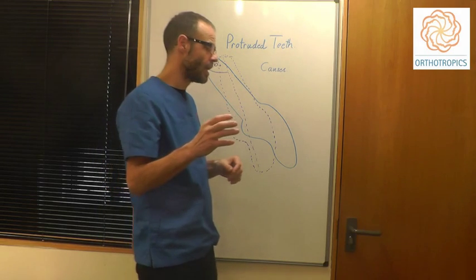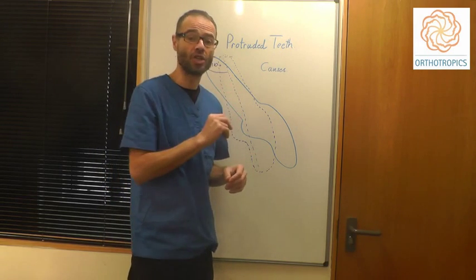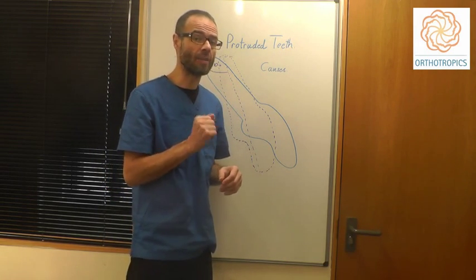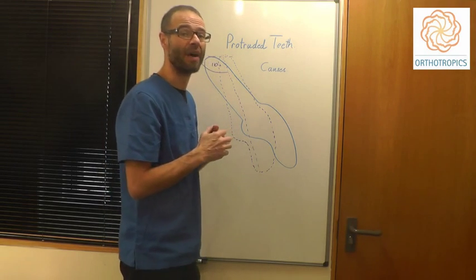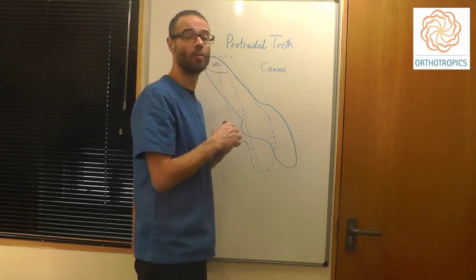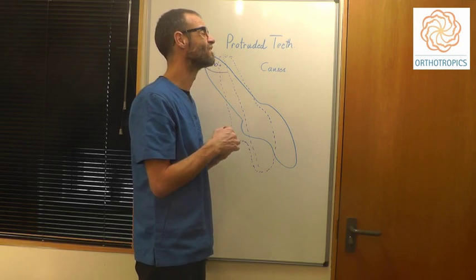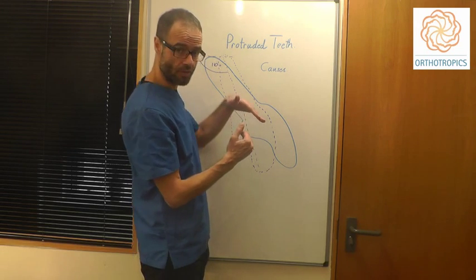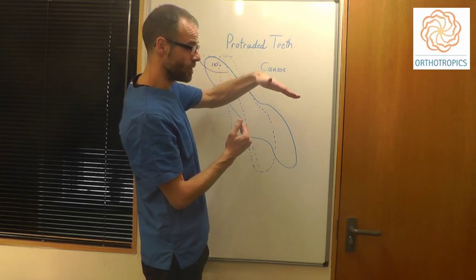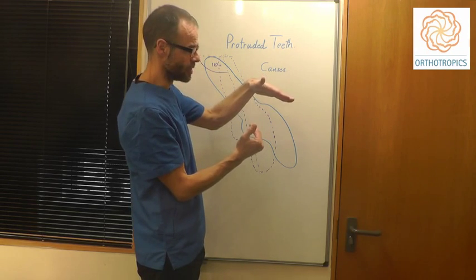A special situation is when you can get a lip catch. So if the bottom lip gets behind the top front teeth like this, that will cause the top front teeth to be protruded. Of course also the bottom front teeth to be retruded.